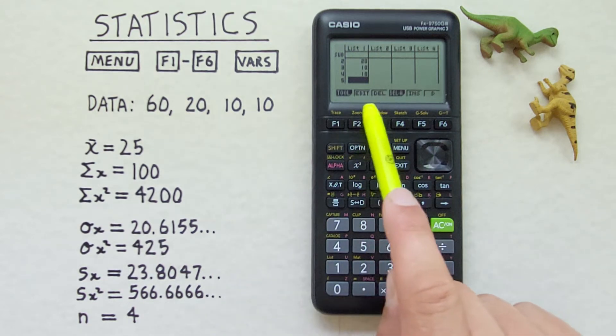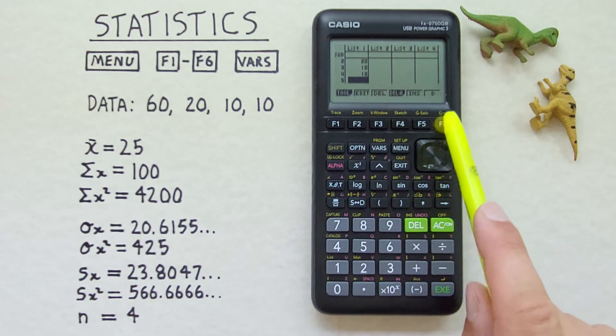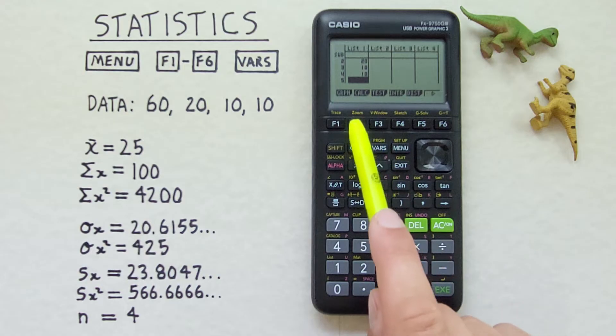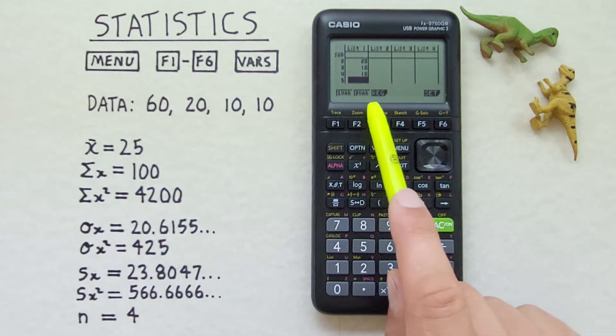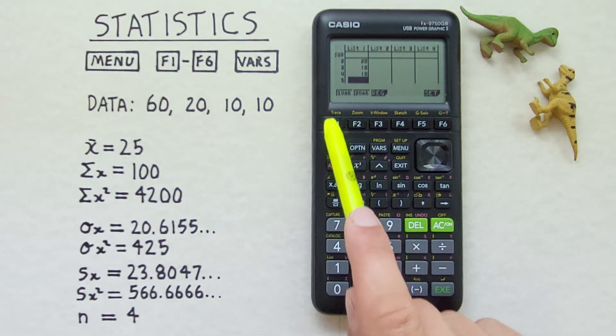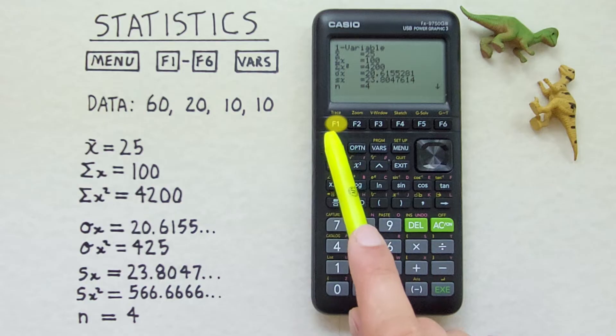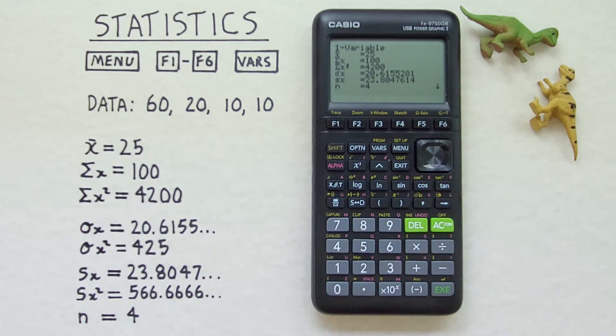Now if we don't see calc at the bottom here we want to press F6 until we do. There we go we have calc here at the F2 key so we press that and then it'll ask one var or two var. We want one variable stats so we'll press F1 and there we go. It's calculated our stats for us.